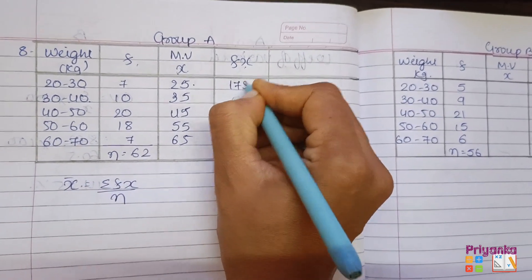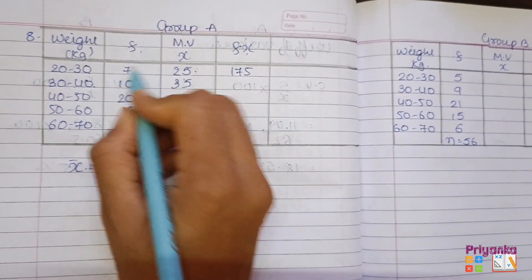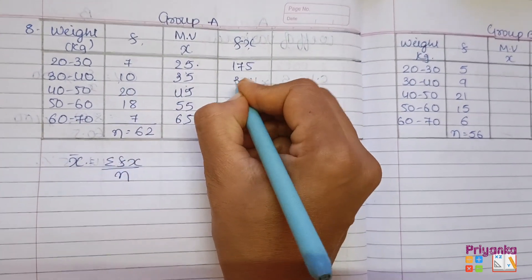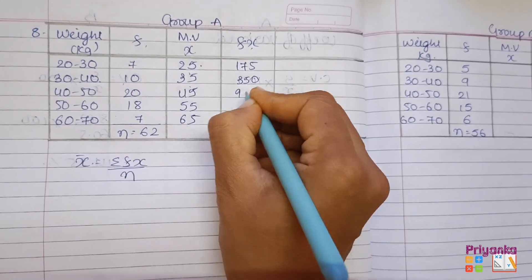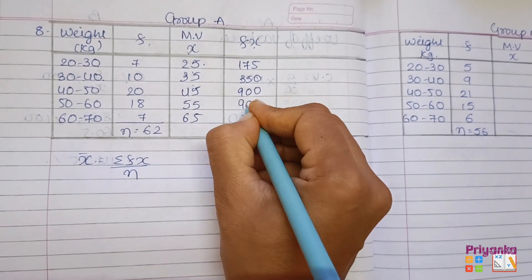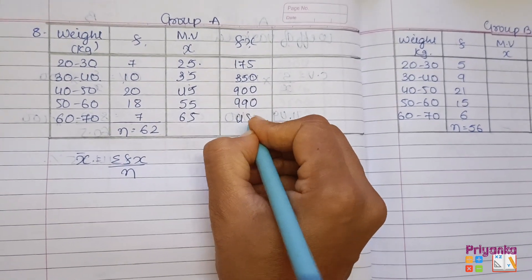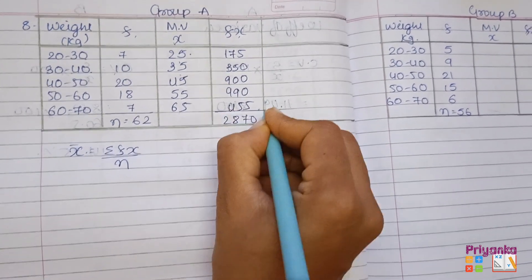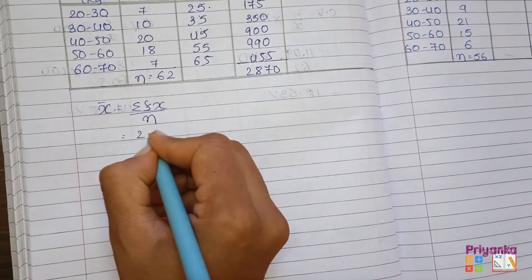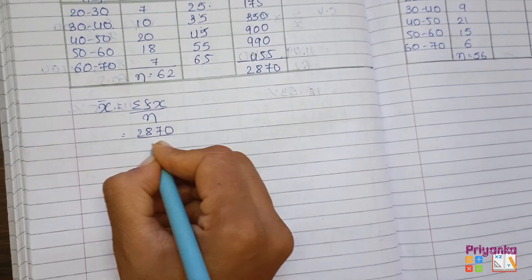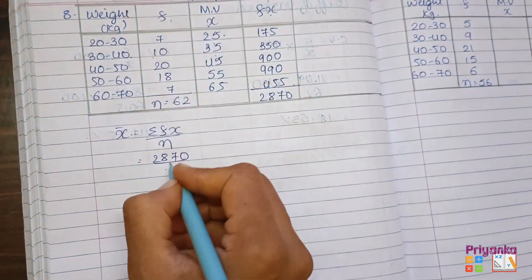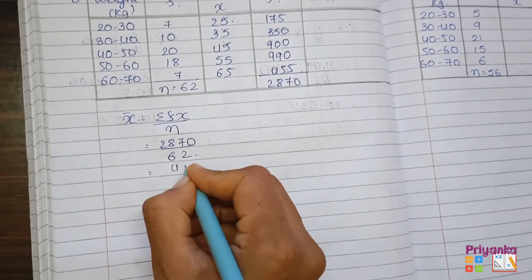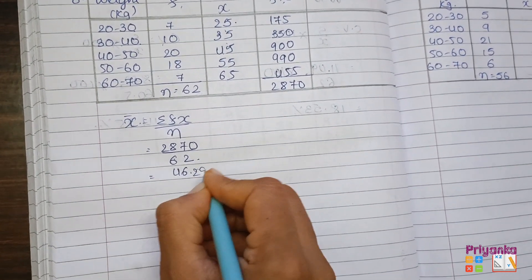fx values: 25 multiplied by 7 gives 175. Then 35 into 10 gives 350. Then 900, 990, and 455. The total of fx will be 2870. Taking it into the formula, 2870 divided by n, that is the total number of frequencies which is 62, and here we get the answer 46.29.